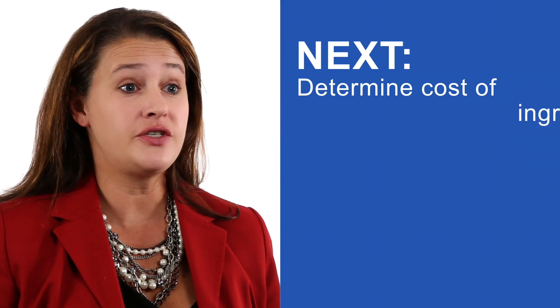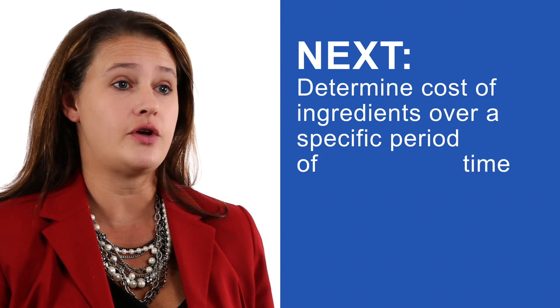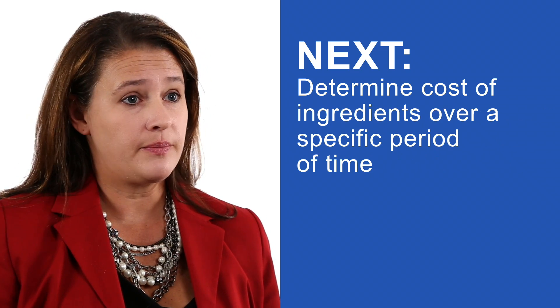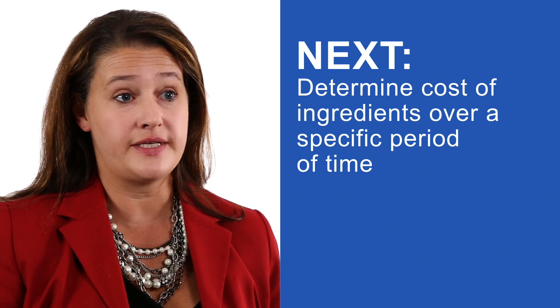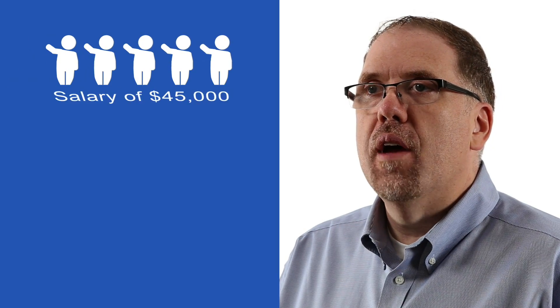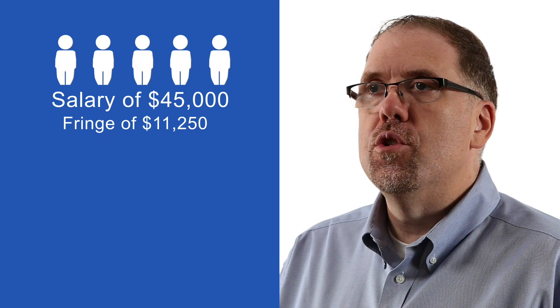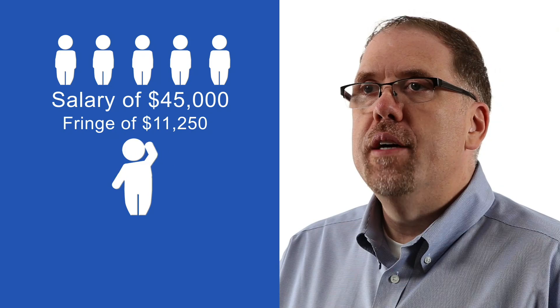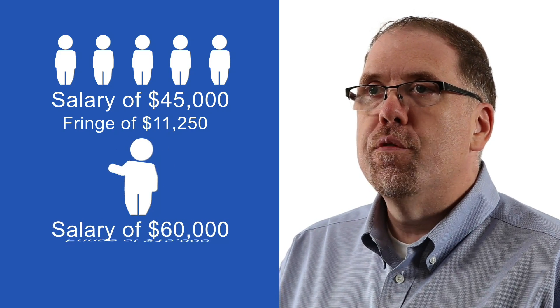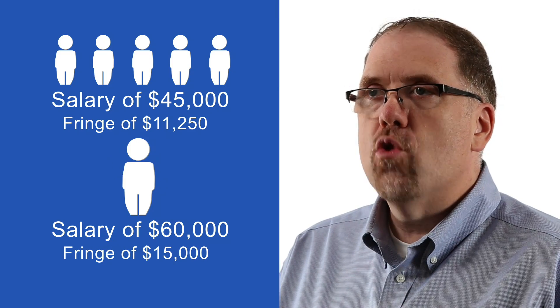That makes sense. Now I've listed every resource my program uses and calculated the time spent on various program components. What's the next step? Next, we need to determine the cost of these ingredients over a specific period of time. For this example, give me all of the direct costs for program staff of in-home services over a year. We have five case managers with a salary of $45,000 plus fringe, which is $11,250 each, and a supervisor salary of $60,000 plus fringe, which is $15,000, and travel expenditures of $5,000.